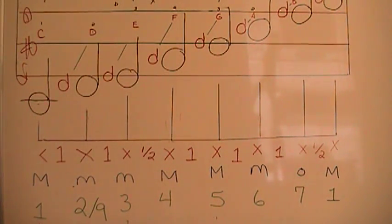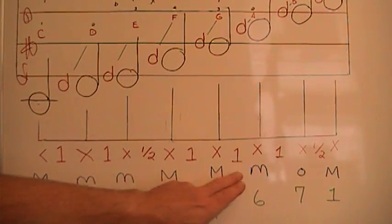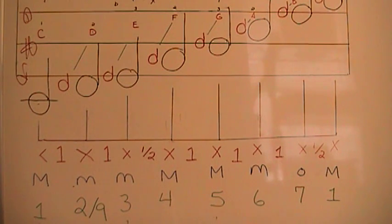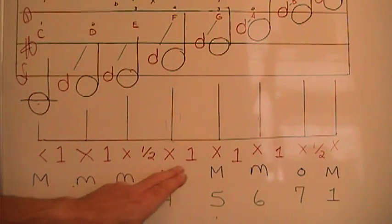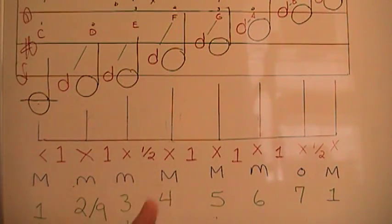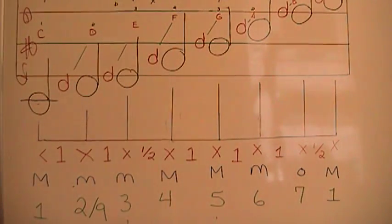So the formula for a major scale is quite simple: whole step, whole step, half step, whole, whole, whole, half. If you start on any note on any instrument and you play this formula — whole step, whole step, half step, whole step, and so on — you will build a major scale, and its root will be the note that you started on, and it will be the last or eighth note that you ended on.